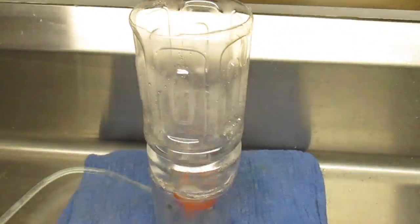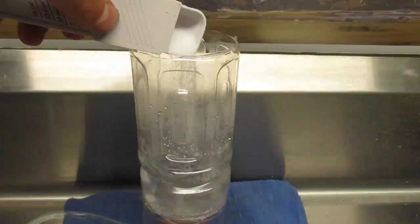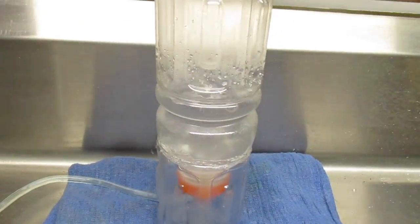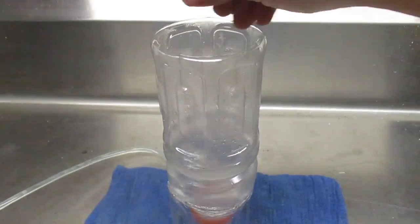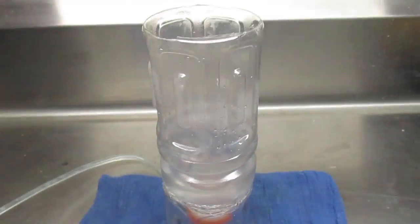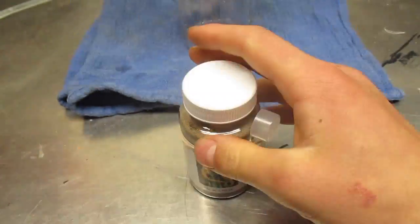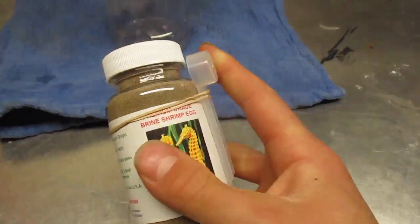I'm going to add a pinch of baking soda in there just to help stabilize that pH. Now you have your brine shrimp eggs. You should buy a high quality brine shrimp egg that has a very high hatch rate.